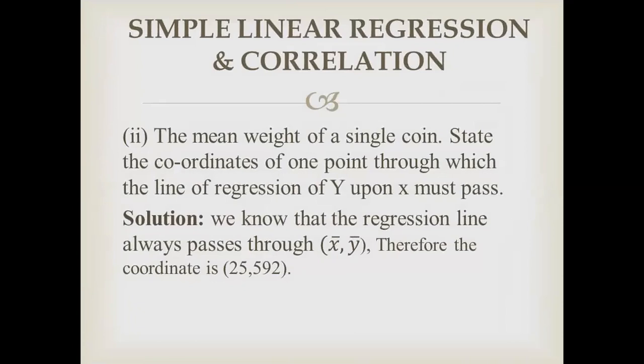Secondly, you have to find the mean weight of a single coin. You have to find the point where the regression line is passing. We know that regression line always passes through x-bar, y-bar. Therefore, the coordinates are 25 and 592. This is the main point where the regression line is passed.